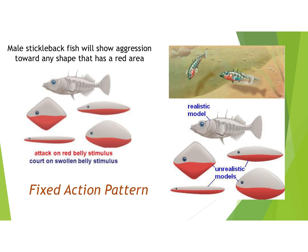An example of a fixed action pattern is male stickleback fish, which show aggression towards any shape that has a red underbelly. Male stickleback fish have a red belly, so males have instinctual behaviors to attack other males — a territoriality type thing. Experiments showed that even unrealistic models would be attacked if they had a red belly, and a realistic fish model without a red belly would not be attacked. So it was the red color that was the stimulus causing that behavior.